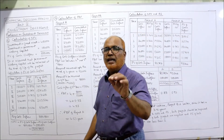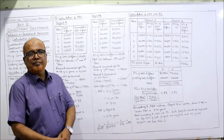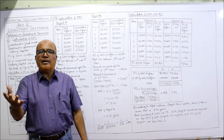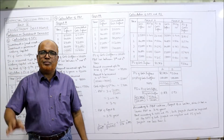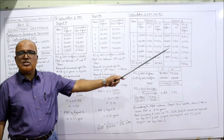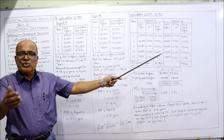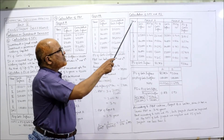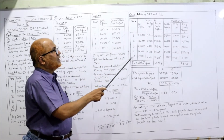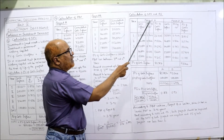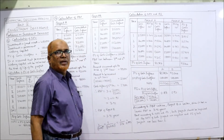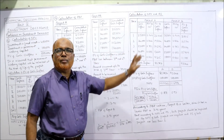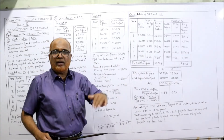Now we need to calculate NPV and profitability index. We can calculate separately for project A and B or in one combined table. To save time, I have calculated all cash inflows in one table with columns for year, and two broad columns for project A and project B, each with three sub-columns.